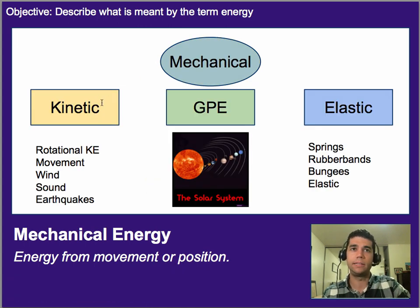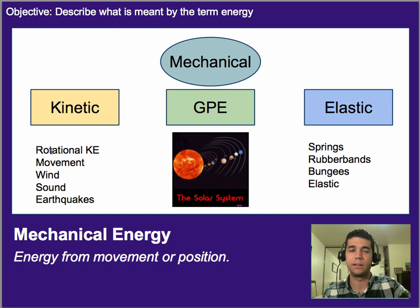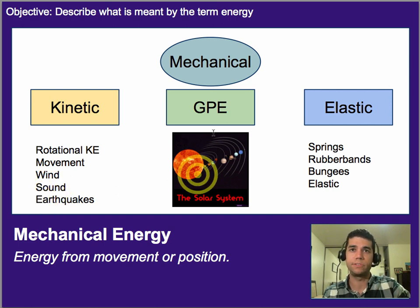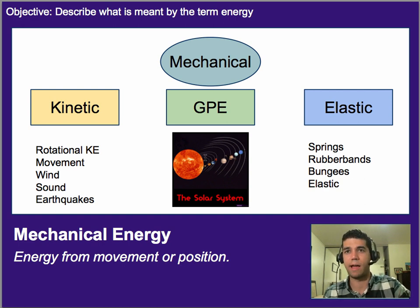Mechanical energy includes kinetic energy, gravitational potential, as well as other forms of potential energy, and elastic energy. There are a couple different types of kinetic energy: energy from movement in a straight line, rotational kinetic energy, and wind is actually a form of kinetic energy — just air molecules moving. Sound is a form of kinetic energy, and earthquakes are as well. Gravitational potential energy is energy stored due to gravity — our solar system is actually held together via gravitational potential energy. And elastic energy we talked about a little bit before.